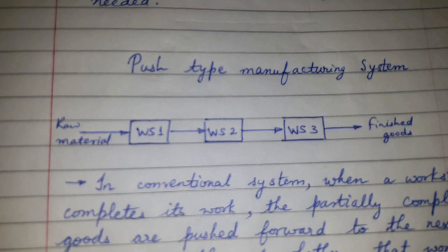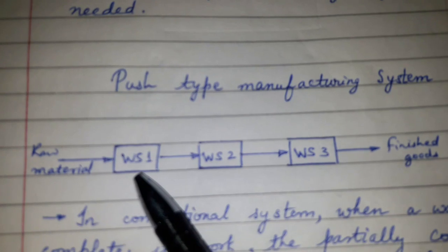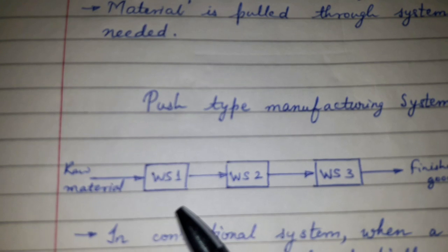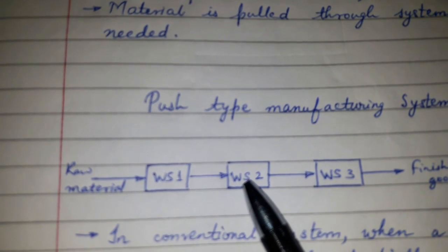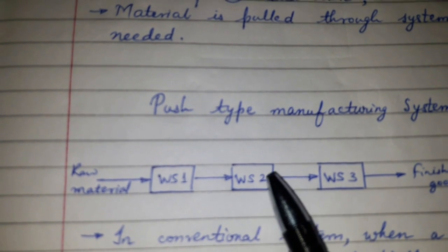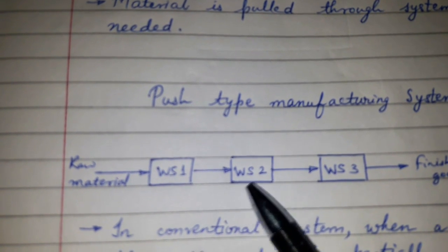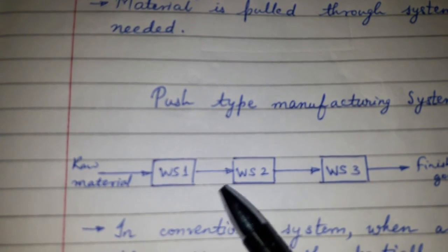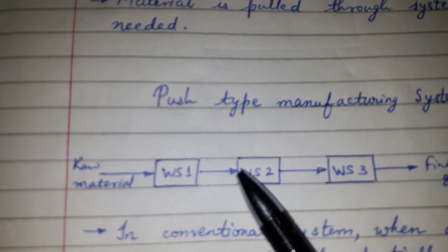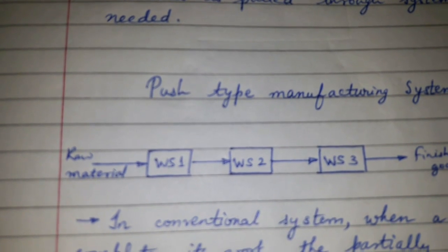Now the push type manufacturing system — this is the conventional way of manufacturing where a workstation completes its work and the partially completed goods are pushed forward to the next workstation, regardless of whether the next station is ready to receive the material. If the next machine or workstation is not ready, there will be a pile-up of inventories or WIP — work in progress.